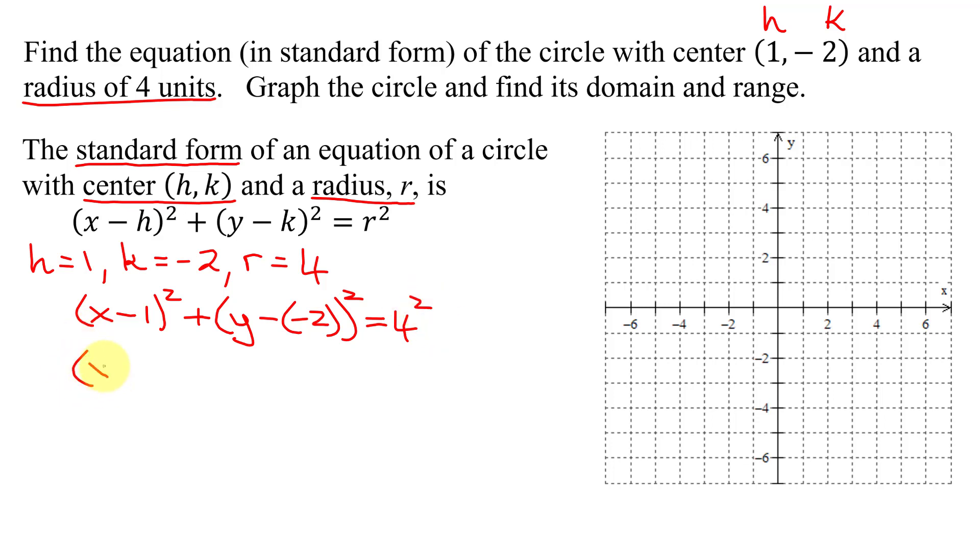Simplifying, I get (x - 1)² plus what's y minus a negative 2? It's (y + 2)² equals 4² equals 16. So there is the equation of this circle in standard form.